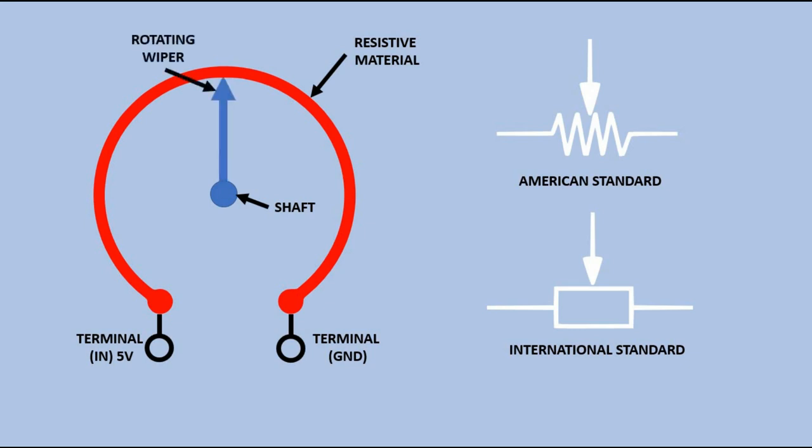The wiper moves along the track to measure the displacement through proportionally dividing the input voltage. The third terminal connects to the wiper.